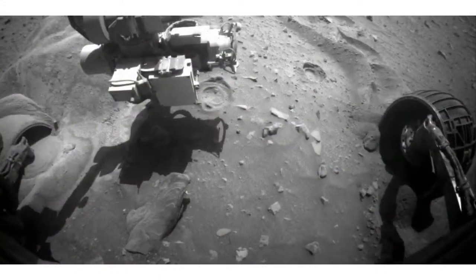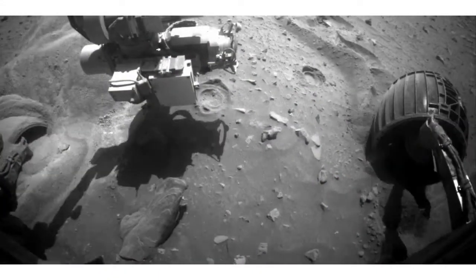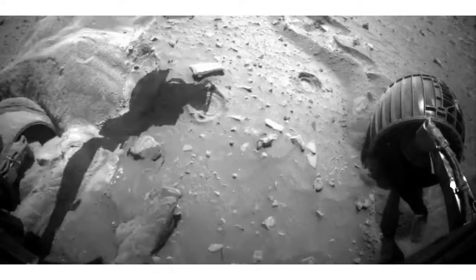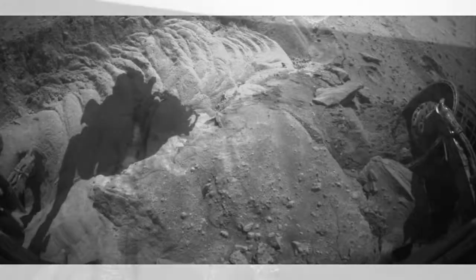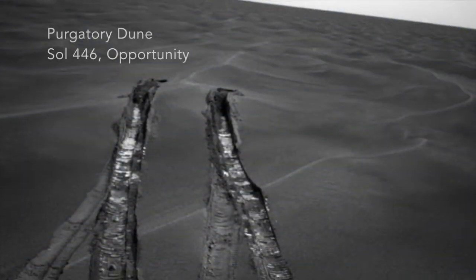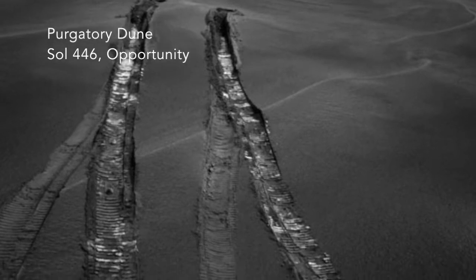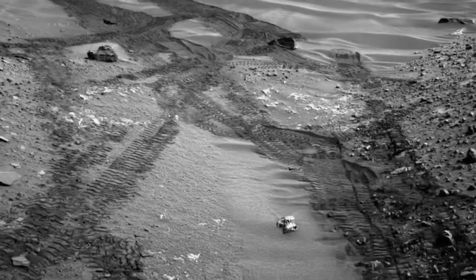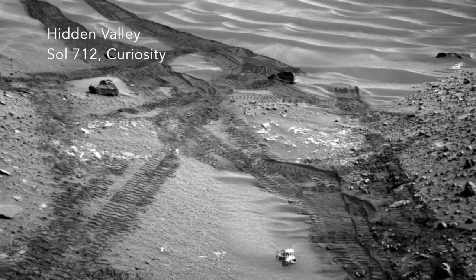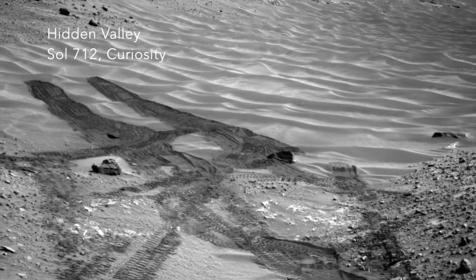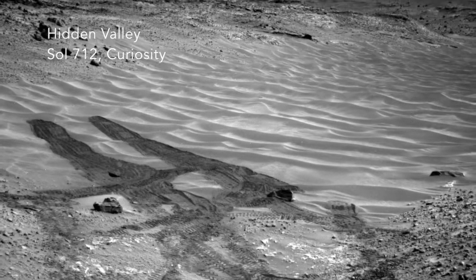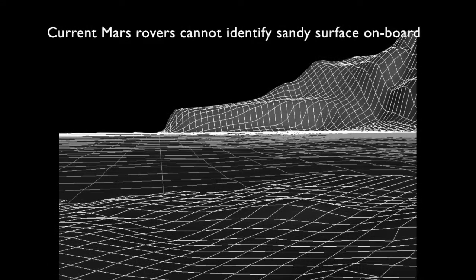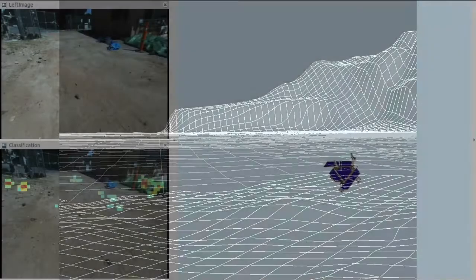Terrain has been a major source of risk for Mars rovers. For example, Spirit ended its mission after becoming embedded in sand. Opportunity got stuck in Purgatory Dune and took six weeks to escape. Curiosity experienced excessive slip on a sandy surface in Hidden Valley. Nevertheless, current Mars rovers lack the onboard capability to identify non-geometric hazards like sand.